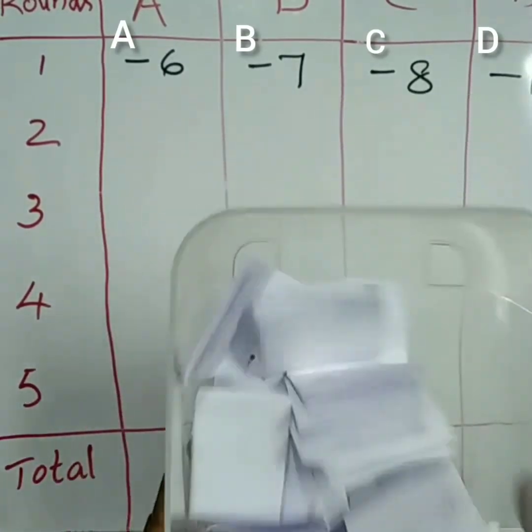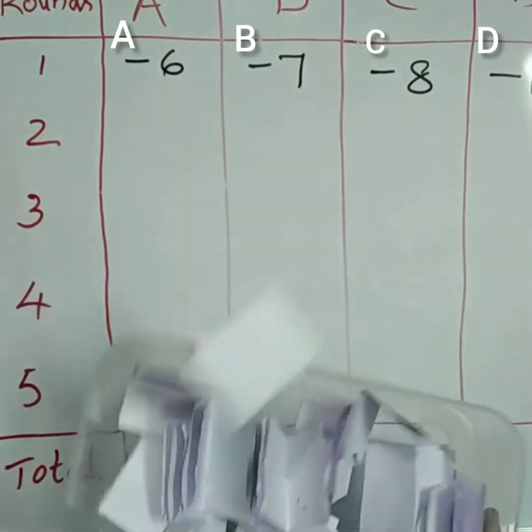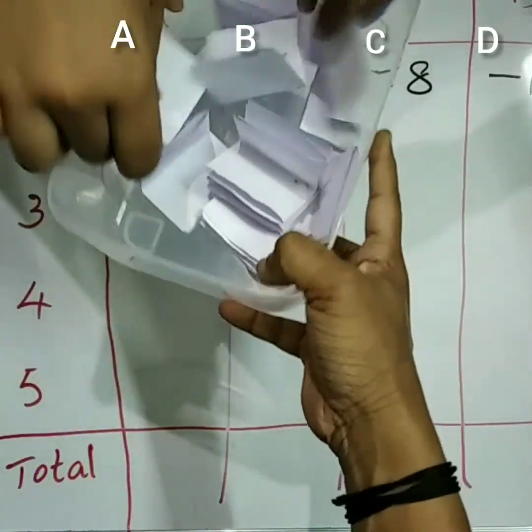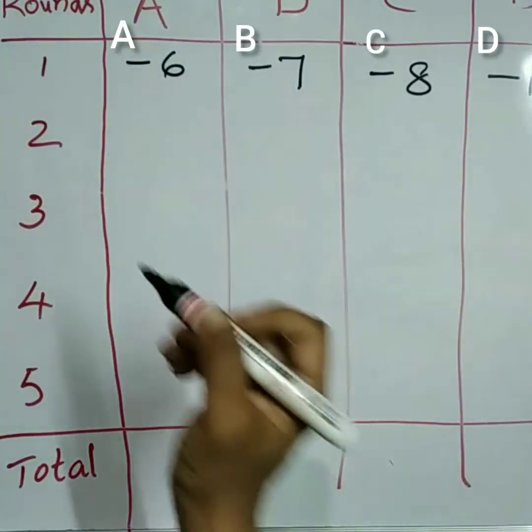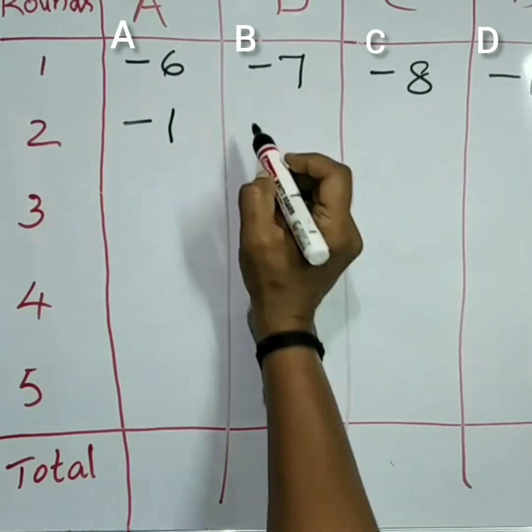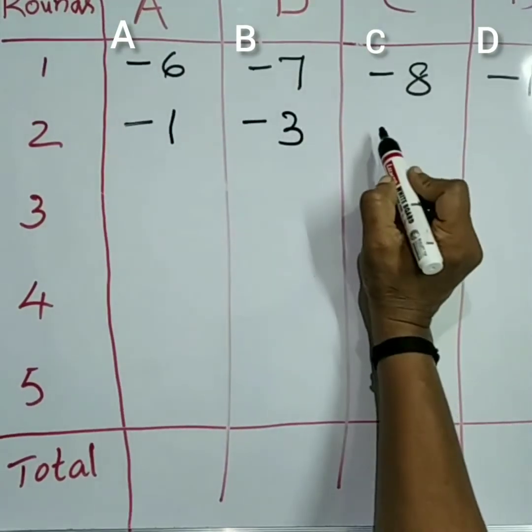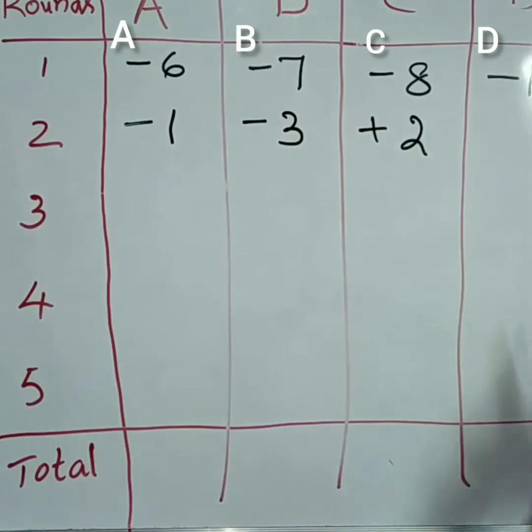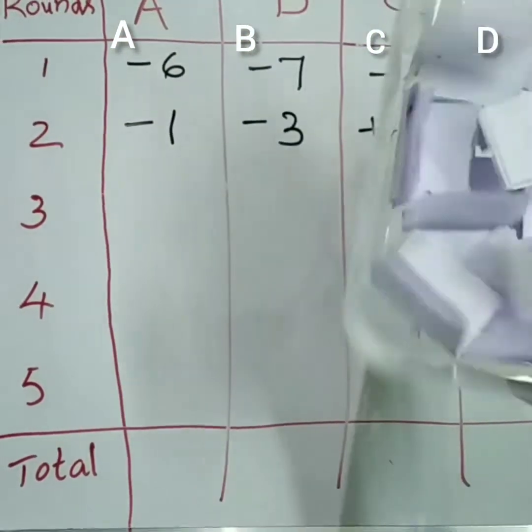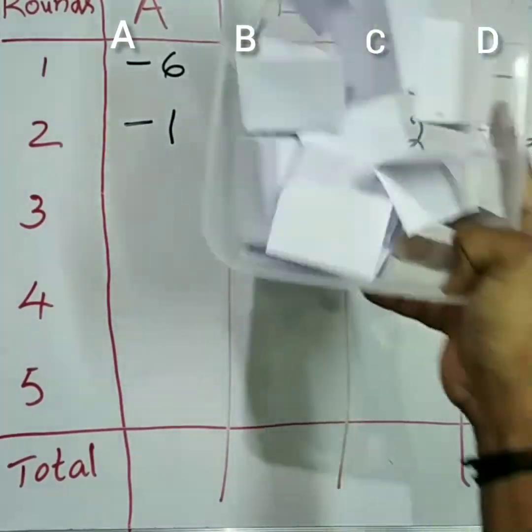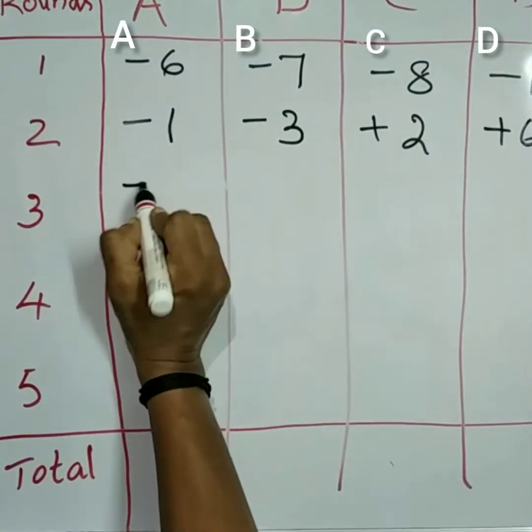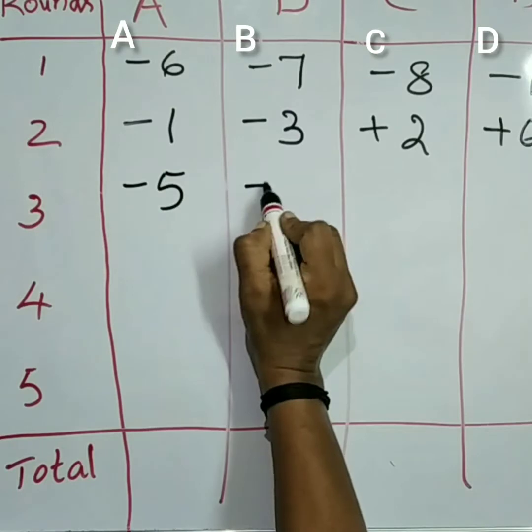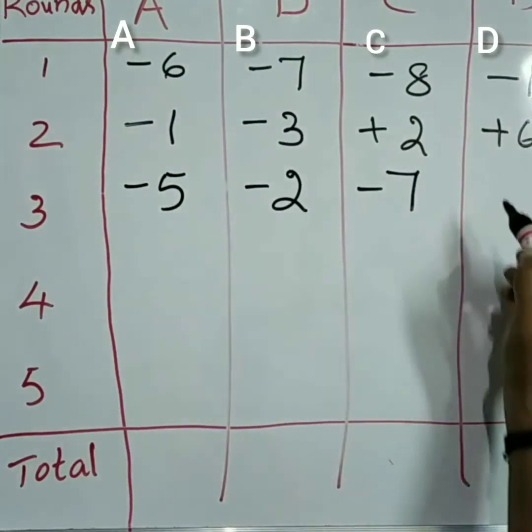Yes, Akshay minus 1. Saranya minus 3. Kanika plus 2. Plus 6. Fold it and keep it inside the box. Fast. Yes. A minus 5, B minus 2, C minus 7, D plus 2.